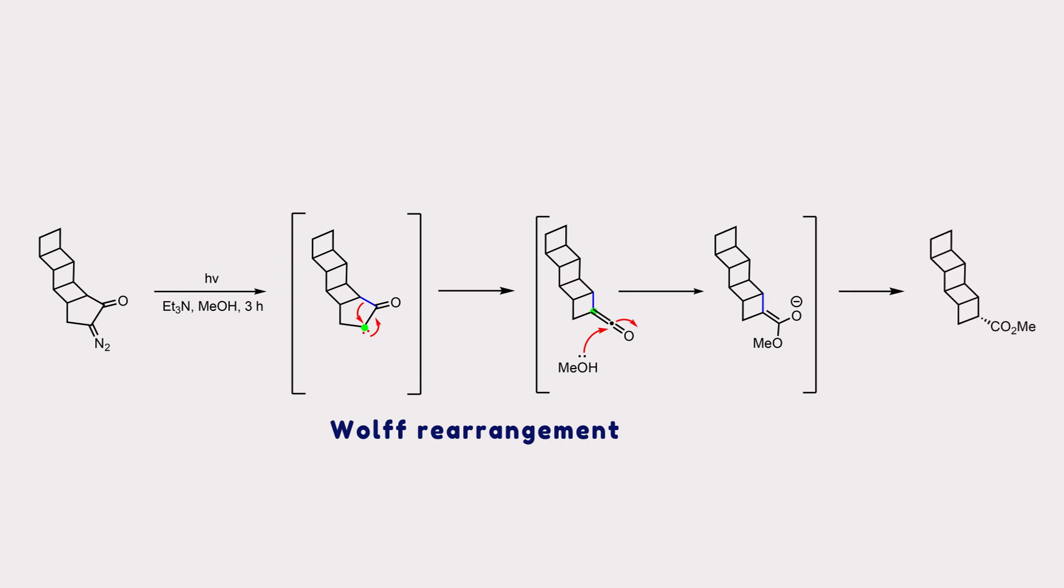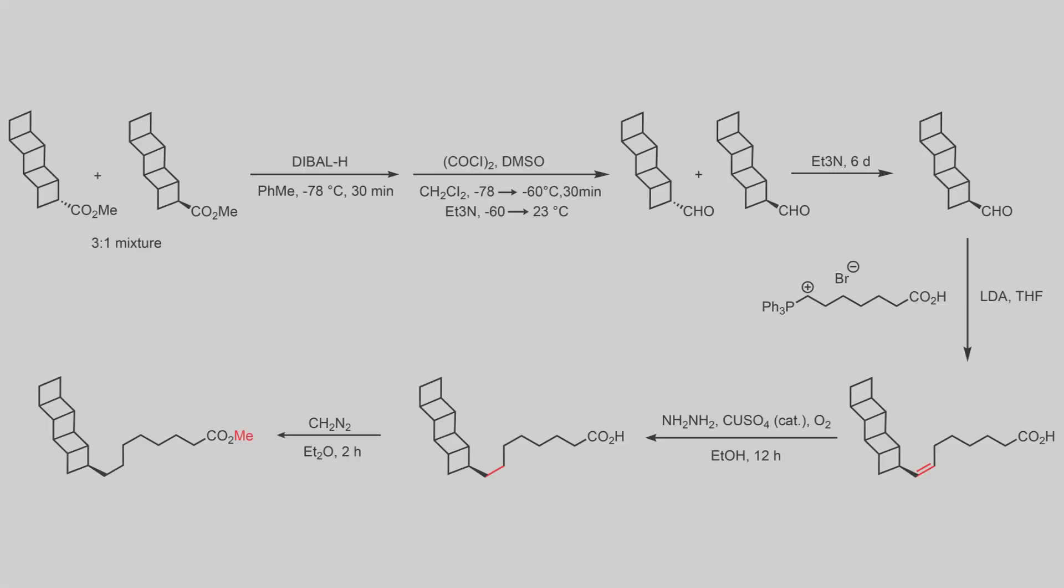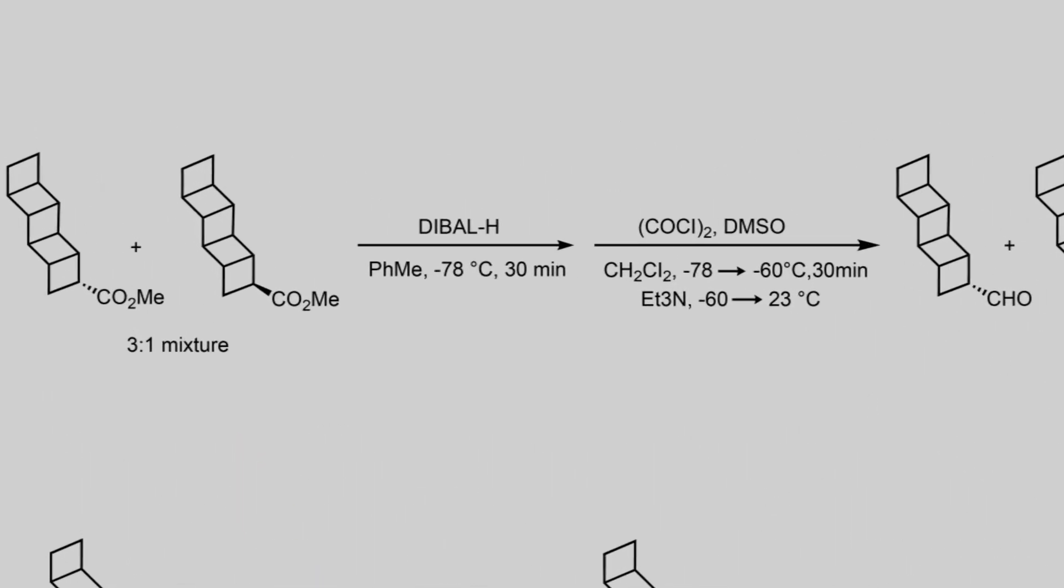Then, protonation under the reaction condition delivers a 3 to 1 mixture of diastereomers, in which endo-isomer is kinetically favorable. Although endo-isomer is not consistent with the target ladderane structure, the mixture of endo and exo-isomers was carried forward to the next step.